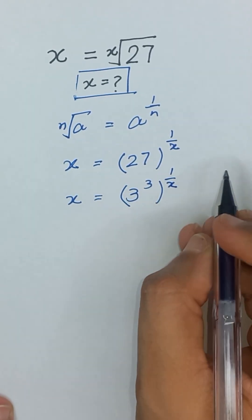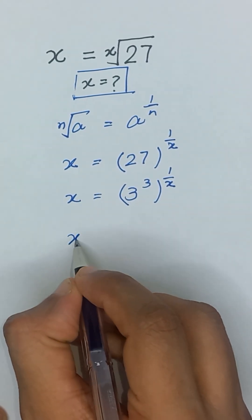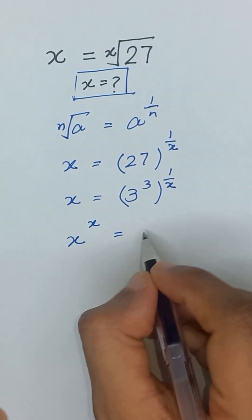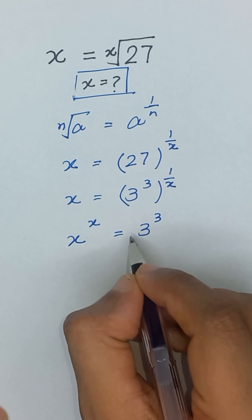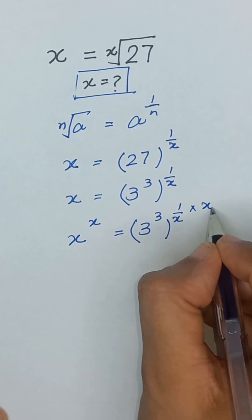Now, we will apply power x on both sides. So it will become x to the power x is equal to 3 to the power 3 and its whole power 1 divided by x multiplied by x.